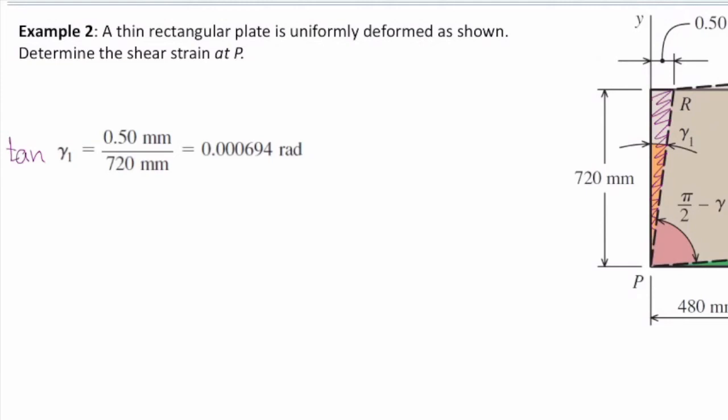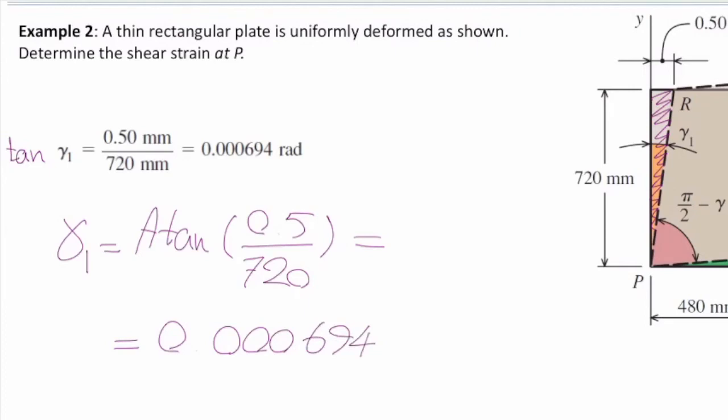Can somebody do that for me? Do you have any calculator? Use the equation that we are looking for is this one. Gamma 1 is arc tangent of 0.5 divided by 720. How much do you get from your calculator? Okay, so that would be 0.000694. Let me use just three digits. Did you try that? Did you get the same number?